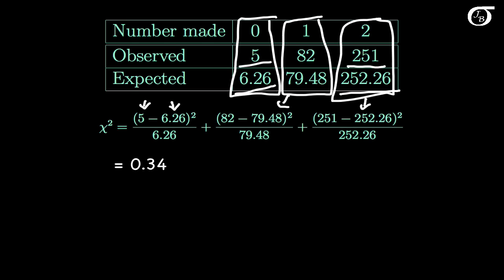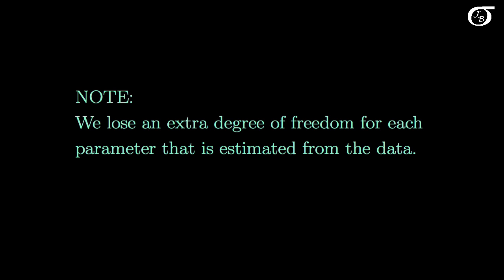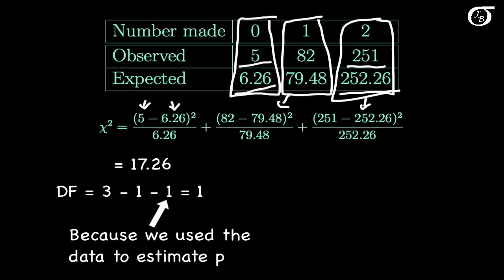We again need the p-value, which means we need the appropriate degrees of freedom. It might be tempting to say 3 cells gives 3−1=2 degrees of freedom, but that's not quite right here. An important point: we lose an extra degree of freedom for each parameter estimated from the data. Since we estimated p from the data, we lose one extra degree of freedom, giving 3−1−1=1 degree of freedom.